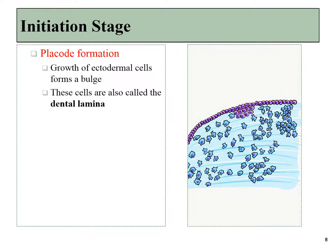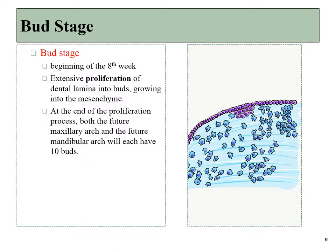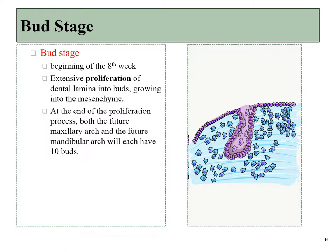Once a small region of oral epithelium divides more than neighboring regions, we get a placode — we can point to this structure and say a tooth will form here. We may also call this placode the dental lamina, wrapping up the initiation stage. As cells continue to divide with nowhere to go left or right, they invaginate inwards, leading us to the bud stage.